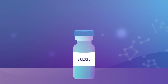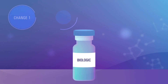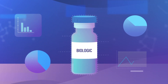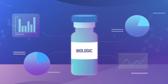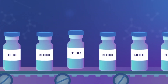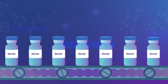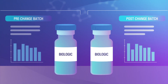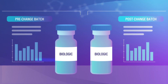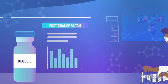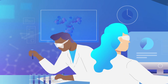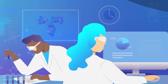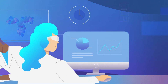Over the life cycle of a biologic, numerous manufacturing changes are instituted. Due to the complexity of these products, each change must meet FDA requirements to ensure product quality for each batch. Comparing quality means the quality attributes of the post-change batch are highly similar to the pre-change batch. A determination of comparability can be based on analytical testing, biological assays, and in some cases, clinical and non-clinical data.